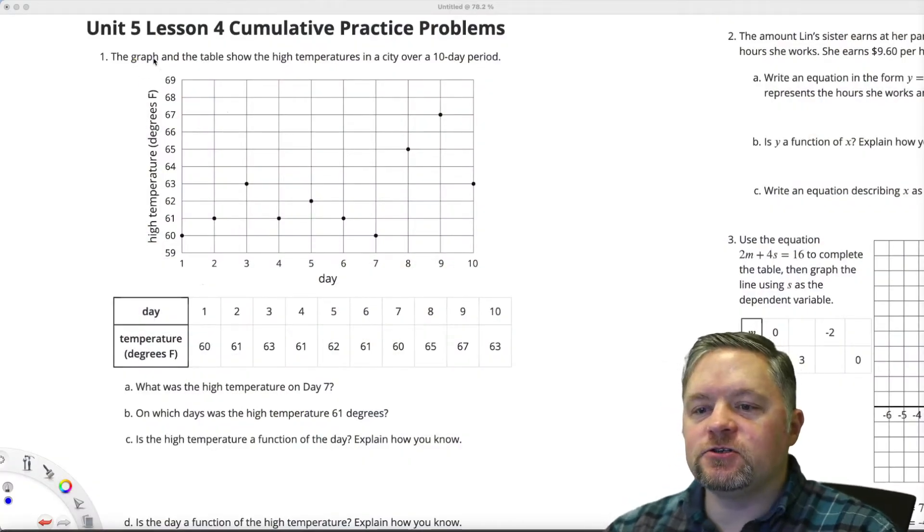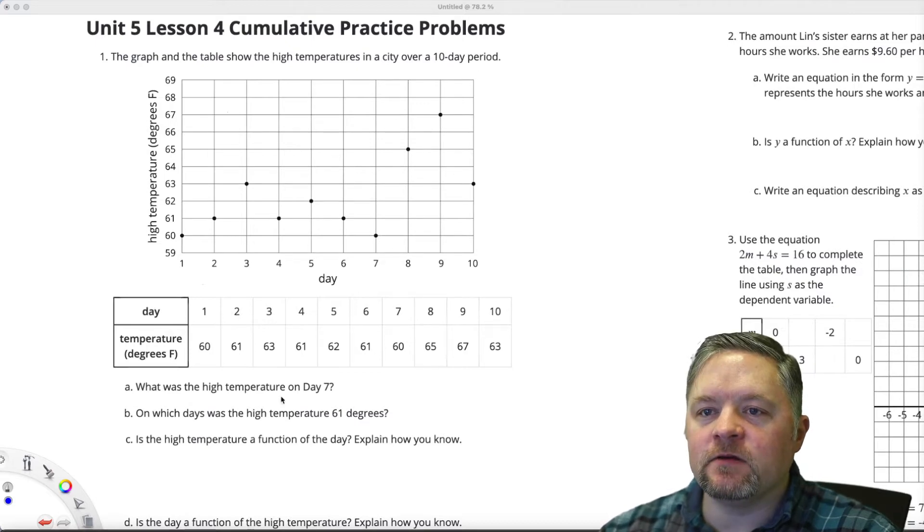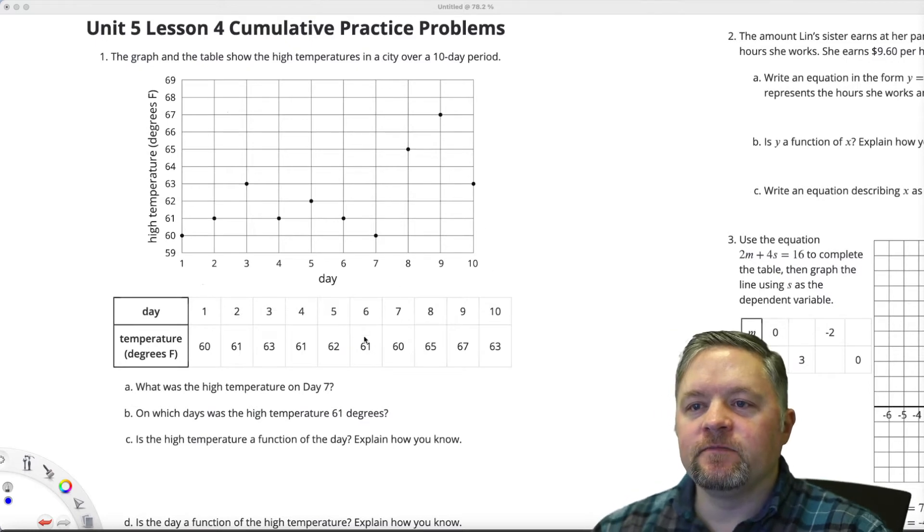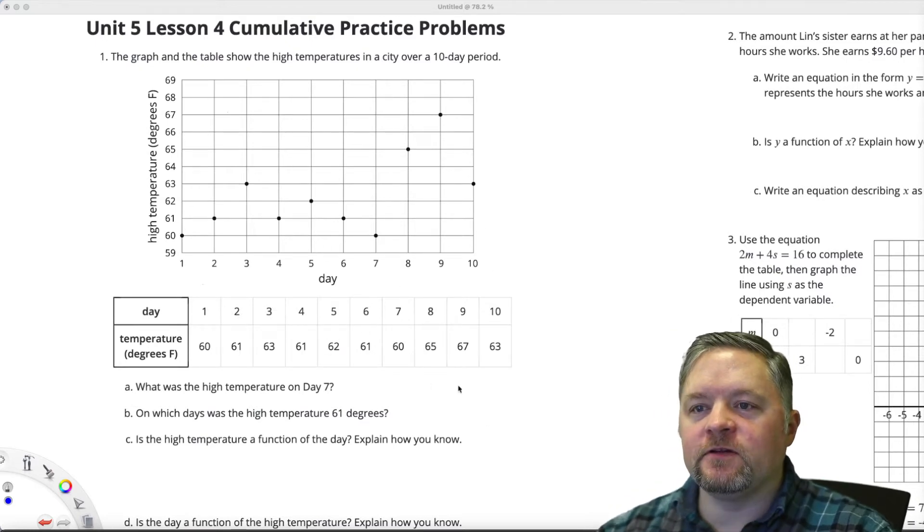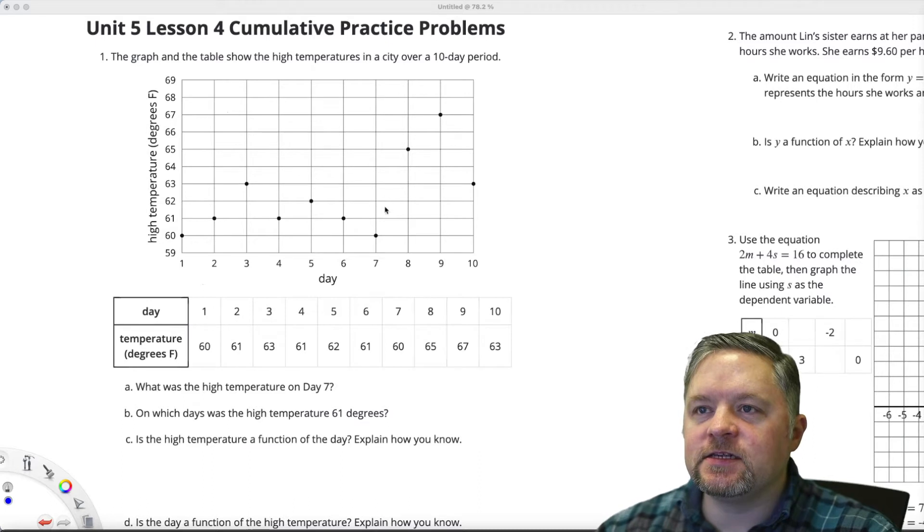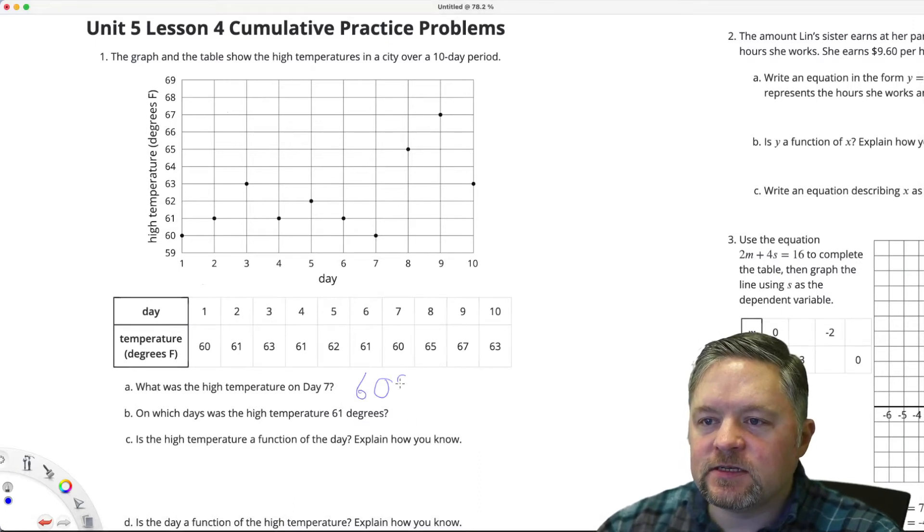Okay, first question here shows us a graph. The graph and the table show the high temperature in a city over a 10-day period. Do these match? Day 1, 60. Day 2, 61. Day 3, 63 degrees. Graph and table of the data. What was the high temperature on day 7? Day 7, 60. 60 degrees Fahrenheit.